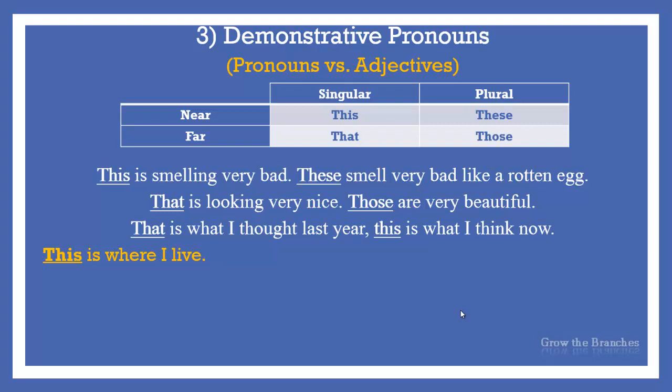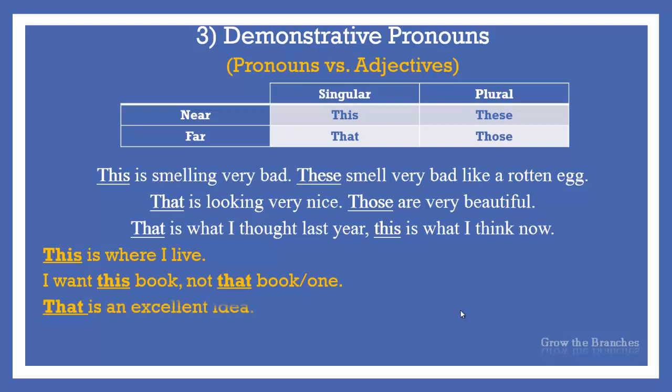Can you identify when the demonstrative is an adjective and when it is a pronoun? This is where I live — this is a pronoun because it takes the place of a noun; there is no noun after it. I want this book, not that book — both demonstratives are adjectives because they are followed by a noun. This is an excellent idea — that is a pronoun. Are those your sisters? — it is a pronoun.